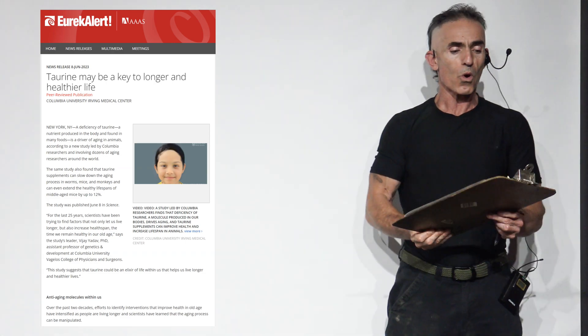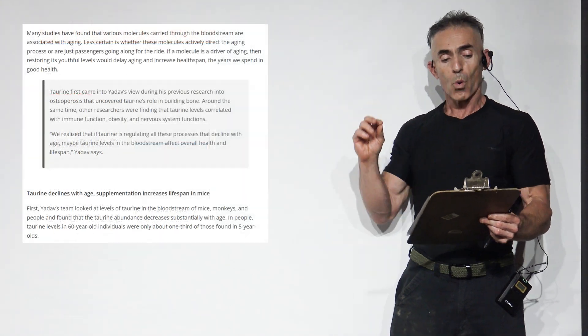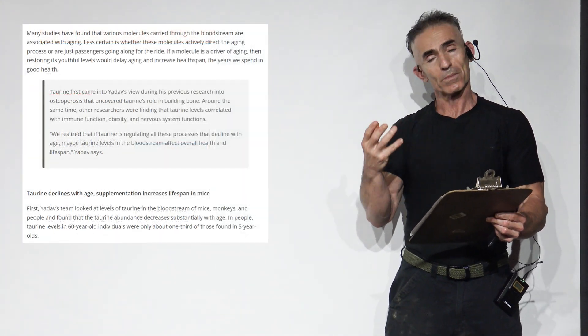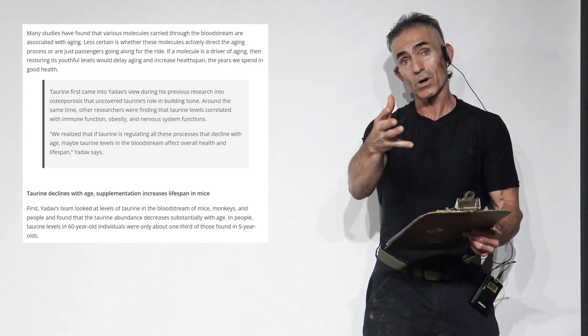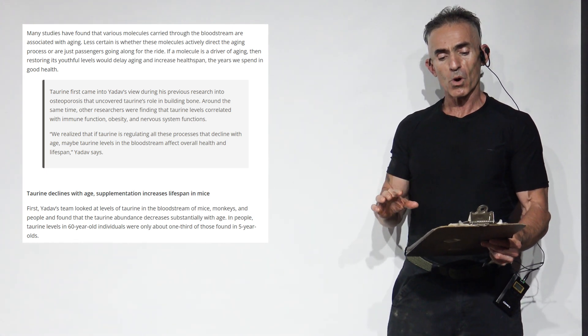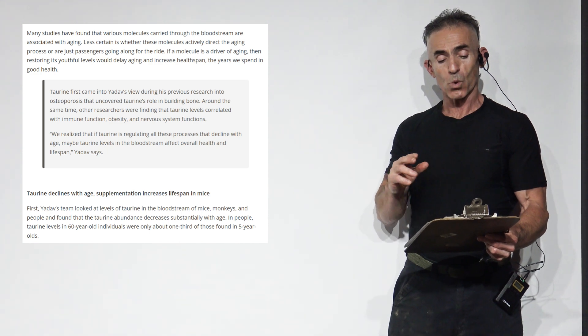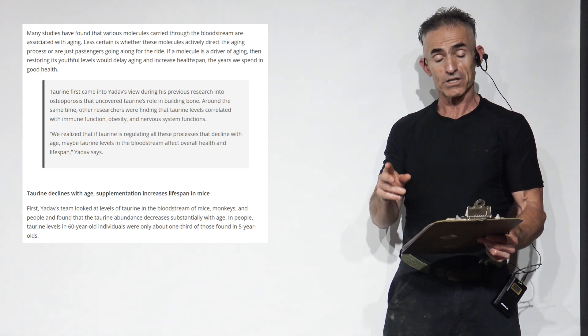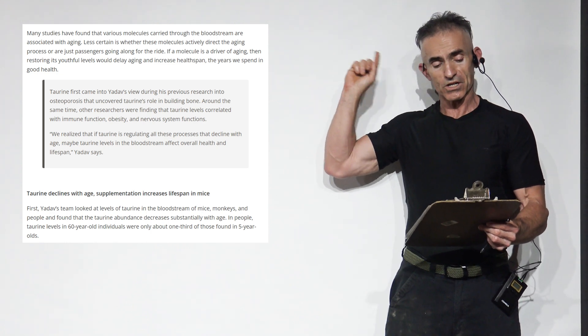Taurine may be key to longer and healthier life. Taurine first came to the researcher's view during his previous research into osteoporosis. That uncovered taurine's role in building bone around the same time. Other researchers found that taurine levels correlated with immune function, obesity, and nervous system function, for example, the research from 10 months ago that we just highlighted.